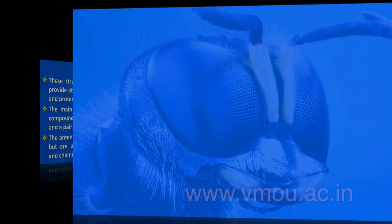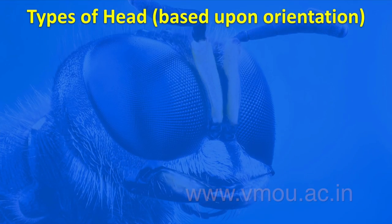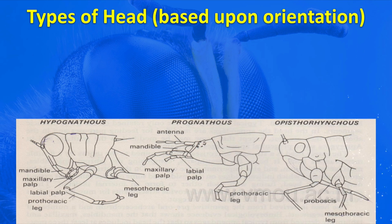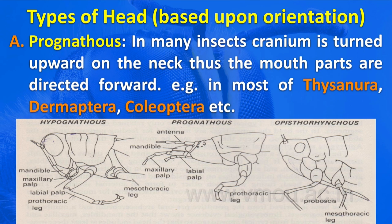Before going further, we should understand the types of head based upon orientation. Depending upon the orientation, there are three types: prognathous, hypognathous, and opisthognathous. In prognathous, the mouth parts are directed anteriorly. In hypognathous, mouth parts are directed ventrally. In opisthognathous, they are directed slightly towards the posterior-ventral position.